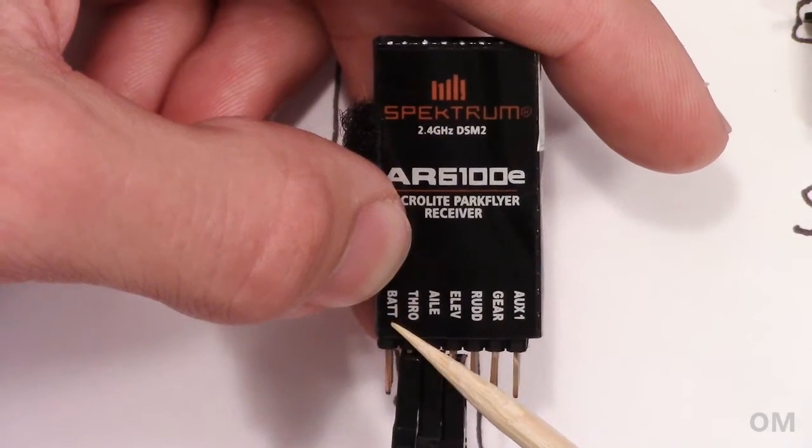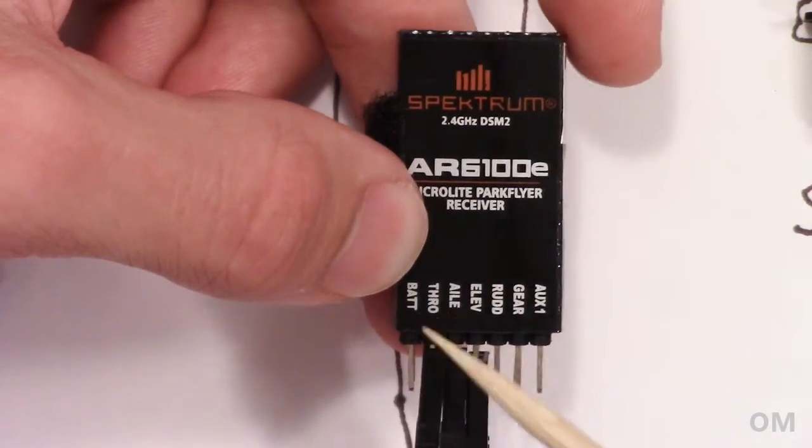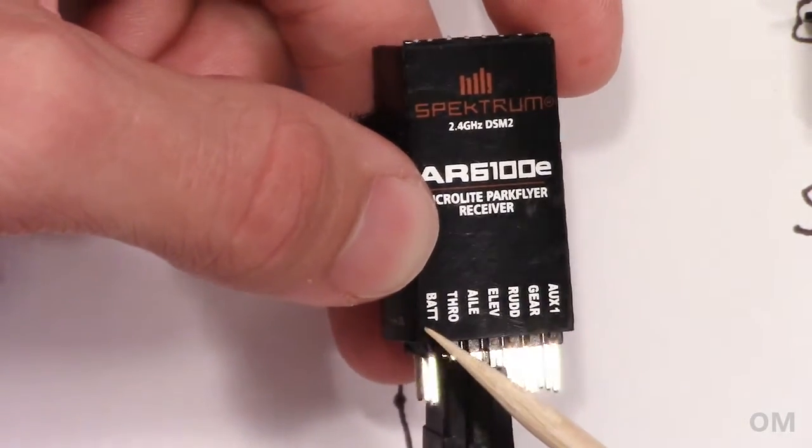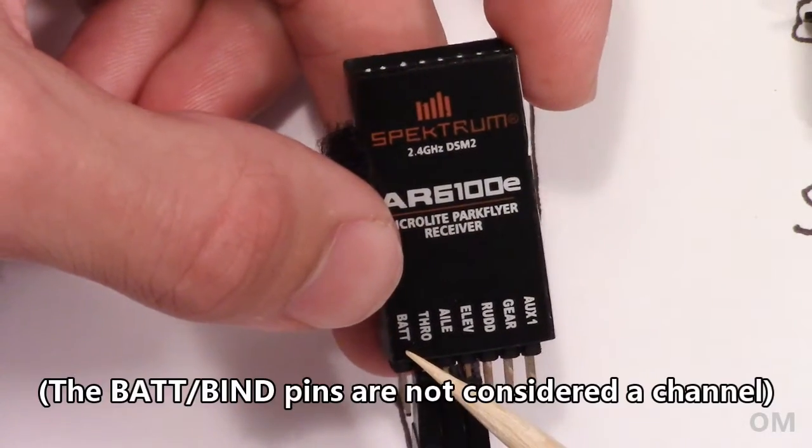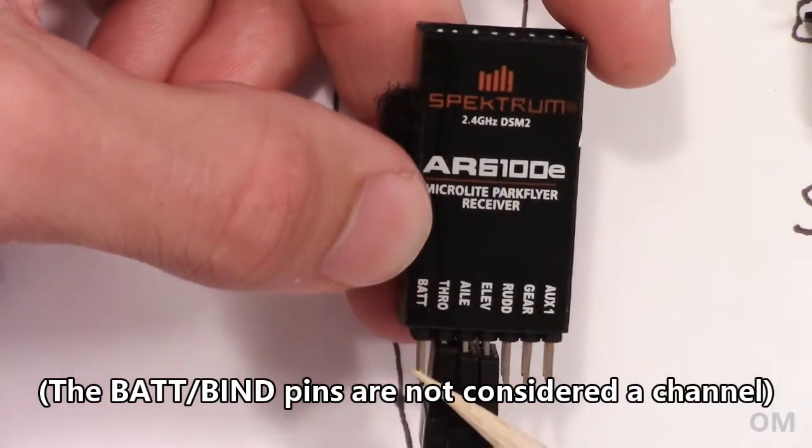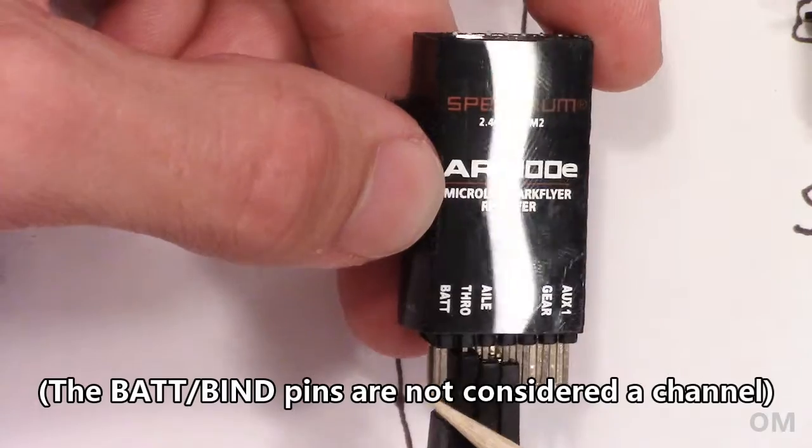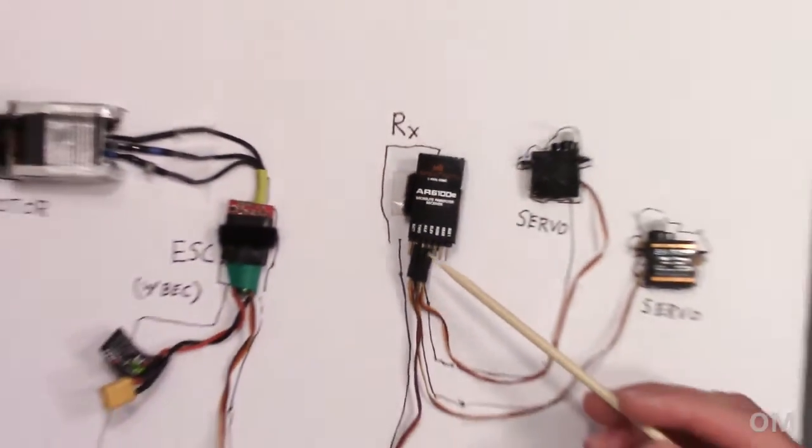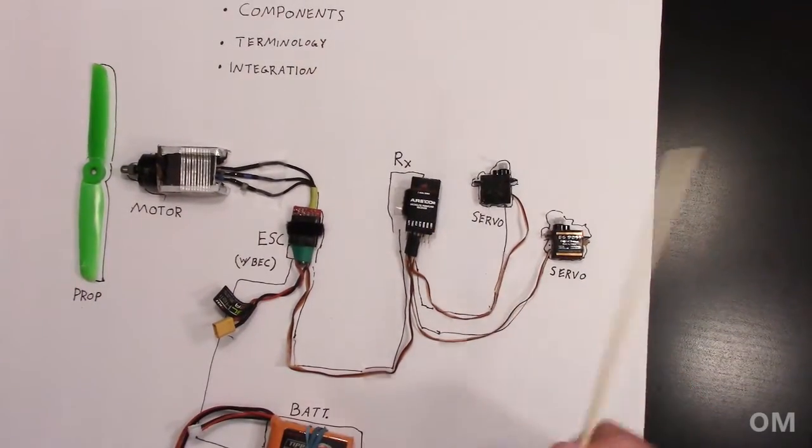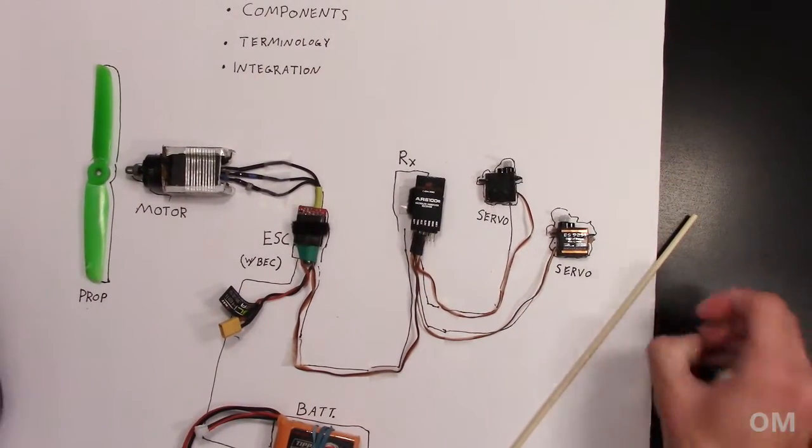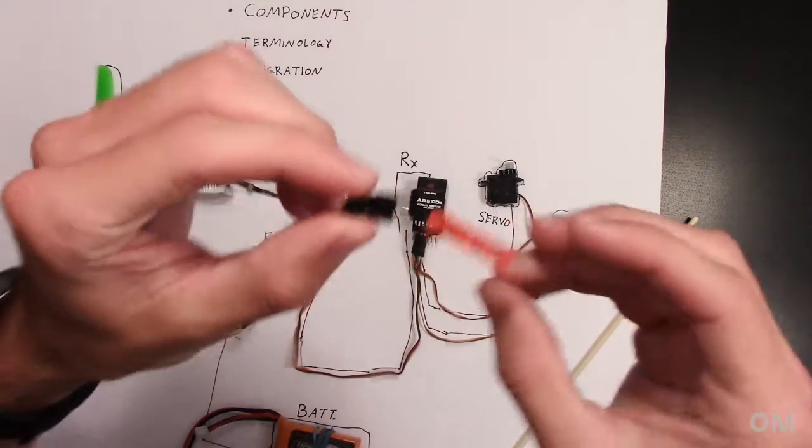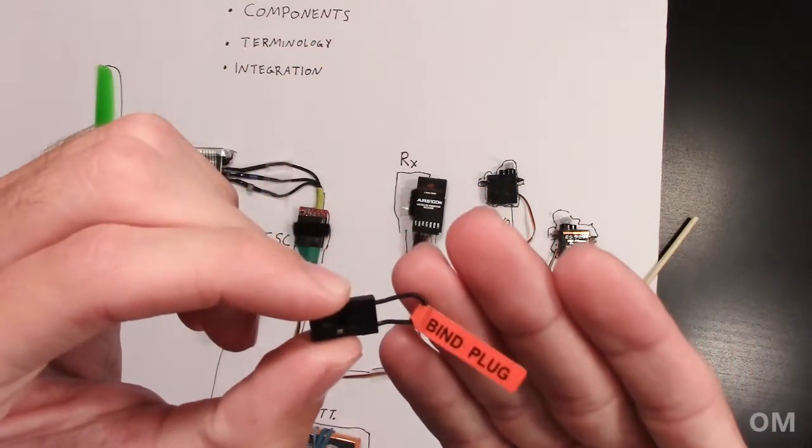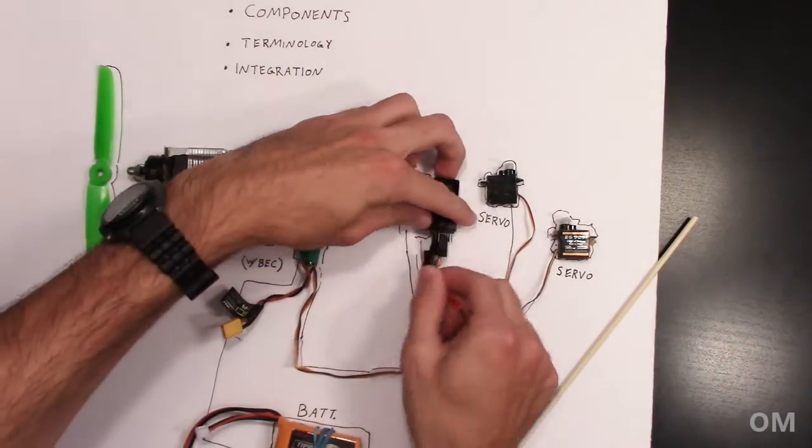So this little port right here, just for future reference, it says BAT. Honestly, I don't know why it says BAT, but this is where you would bind it. And binding is when it's basically when you introduce your receiver to your transmitter and vice versa. So this is called a little bind plug. Look, it even says it right on there, bind plug. And you insert the little bind plug. All it is is a little jumper cable. It's jumping the top pin and the bottom pin.